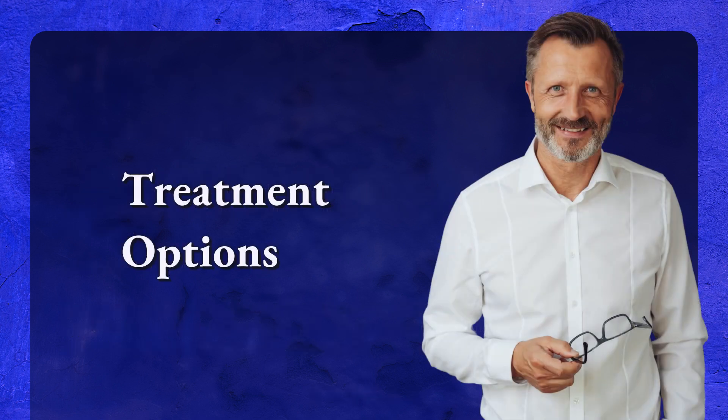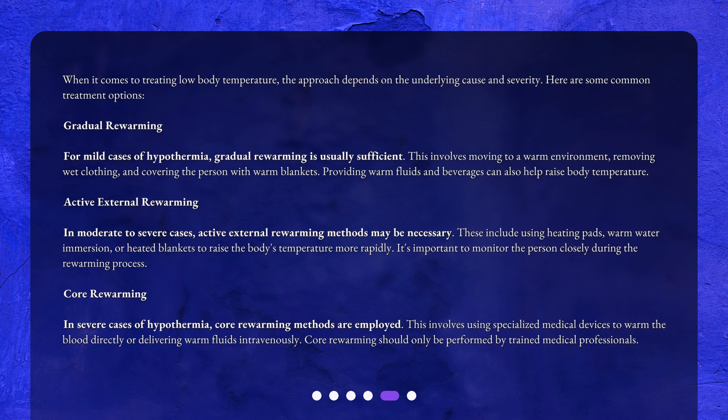Treatment options. When it comes to treating low body temperature, the approach depends on the underlying cause and severity. Here are some common treatment options. Gradual re-warming — for mild cases of hypothermia, gradual re-warming is usually sufficient. This involves moving to a warm environment, removing wet clothing, and covering the person with warm blankets. Providing warm fluids and beverages can also help raise body temperature.